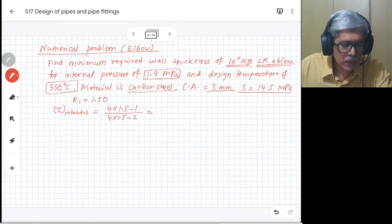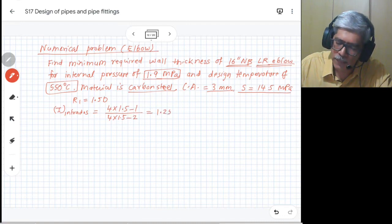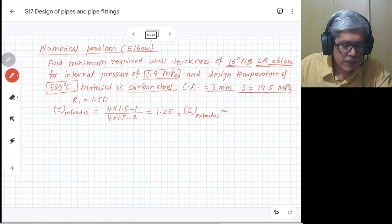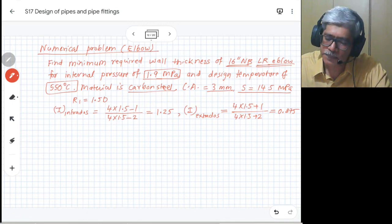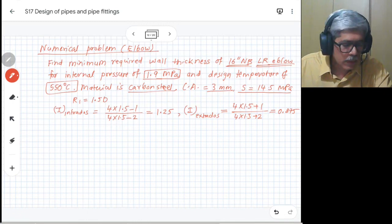4 multiplied by (R1/D), that is 1.5, minus 1, divided by 4 times 1.5 minus 2. So it comes out to be 1.5. And I at extrados is given as 4 into 1.5 plus 1, divided by 4 into 1.5 plus 2.